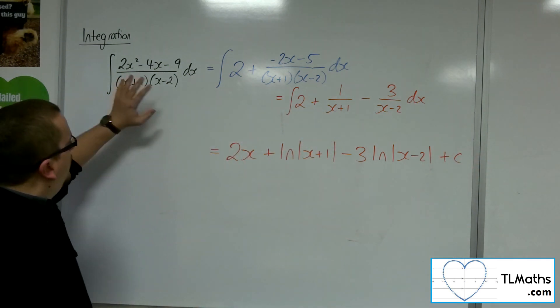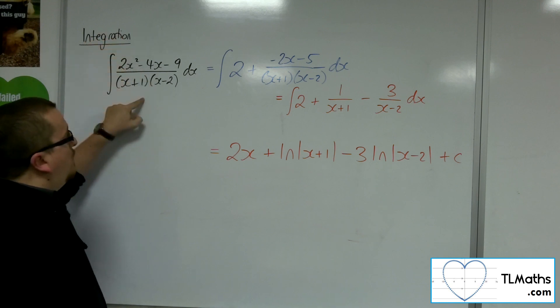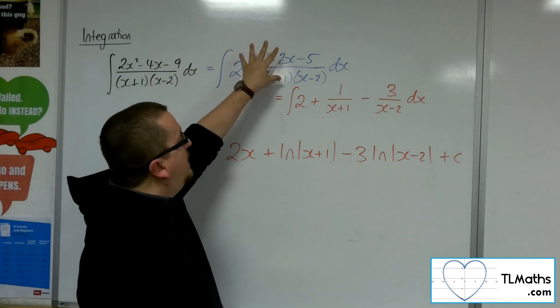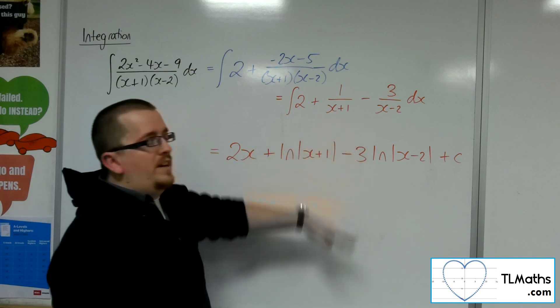So that's how we can integrate something like this. So you're really needing to spot that we've got an improper fraction, so we'd have to use polynomial division first to get to that stage, then partial fractions to get to that stage, and then we're ready to integrate.